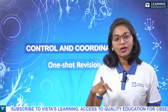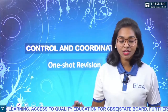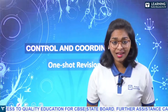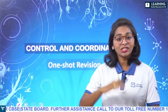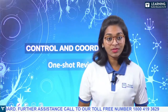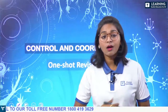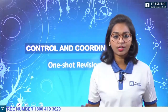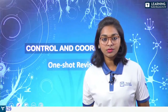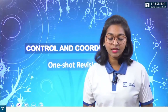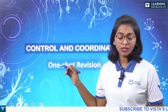Our first previous chapter was life processes, where we discussed respiration, digestion, circulation, excretion, and everything. Now, how are all those processes controlled, or how are they coordinating with each and every other system? That is why this chapter is your second chapter: Control and Coordination.